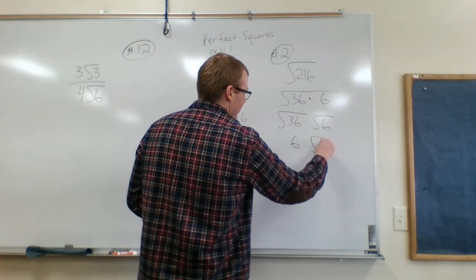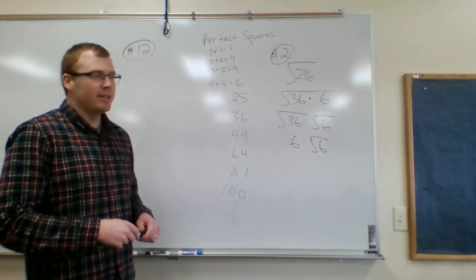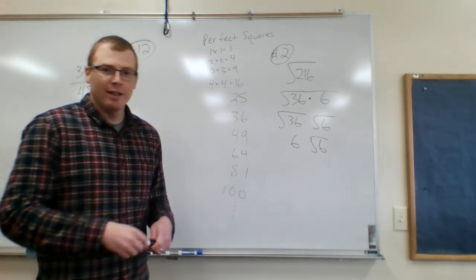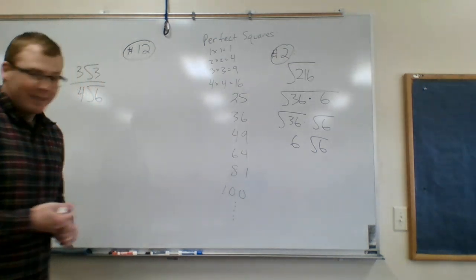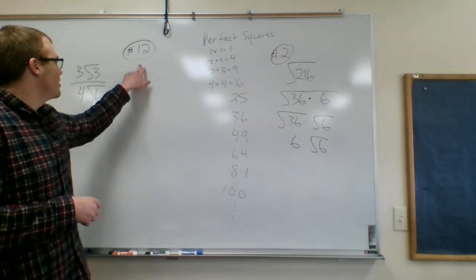And then no perfect square is going to 6 except 1, but it doesn't do anything to divide it by 1. You're just left with the same number. All right, number 12 on the next sheet.